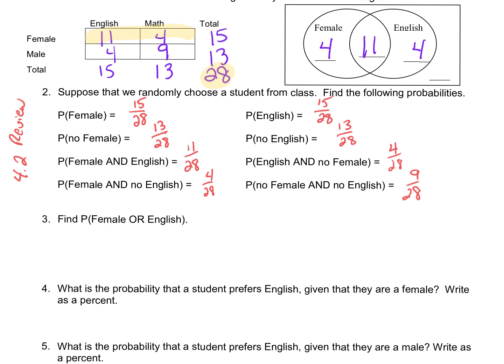This next one's a little tricky because we've got to take care of the double counts. Because in number three, when we look at the probability of female or English, this is equal to the probability of female, plus the probability of English. But we've got to take out that shared intersection — that 11. And so what we have to subtract here is the probability of female and English — that 11.